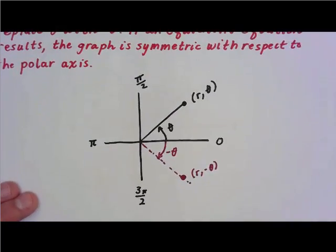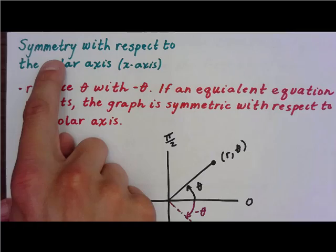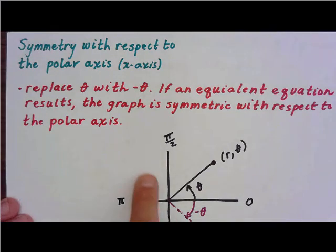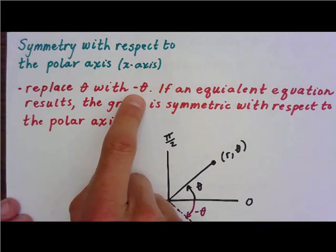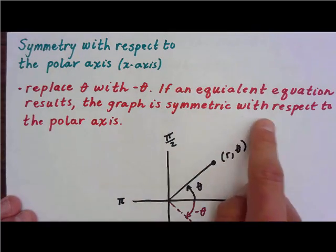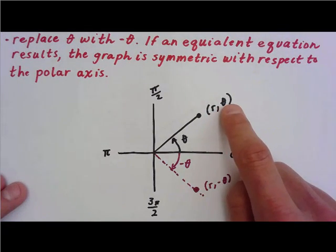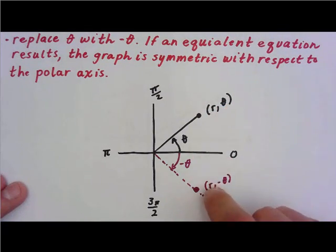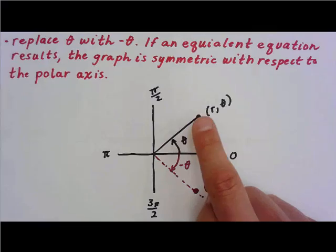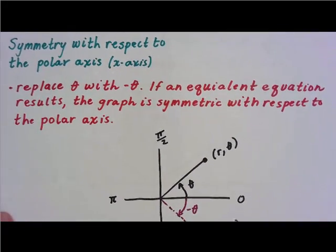There are three types of symmetry and we're going to go through each one. The first is symmetry with respect to the polar axis — that's x-axis symmetry. If you replace theta with negative theta and get the same equation, the graph is symmetric with respect to the polar axis. So if you had r(θ) and took the opposite of theta, it would reflect down — it's essentially a reflection over the x-axis.